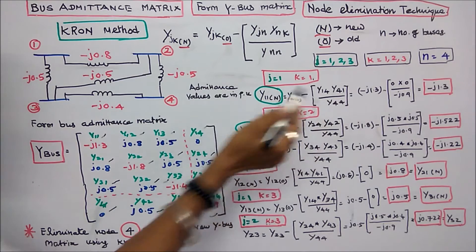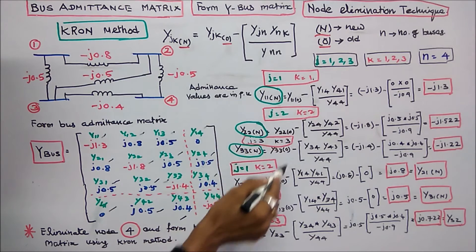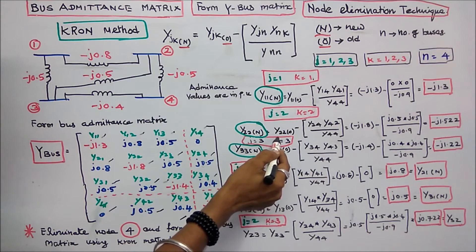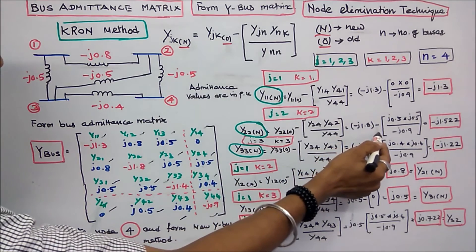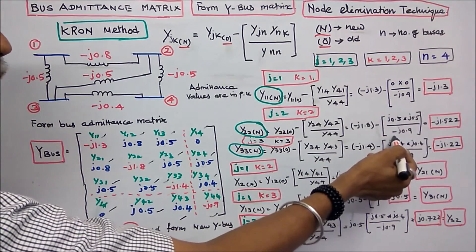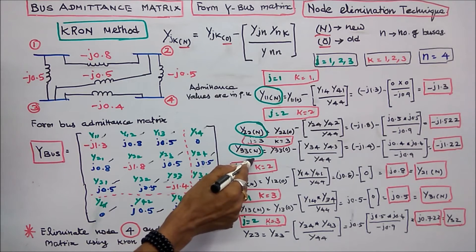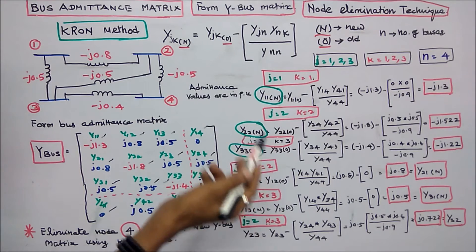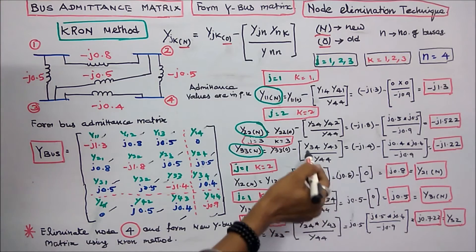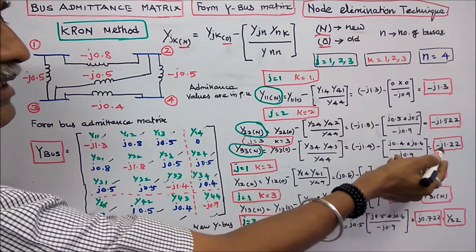For j=2, k=2: Y22(new) = Y22(old) minus Y24 times Y42 divided by Y44. Y22(old) is minus j1.8, Y24 is plus j0.5, Y42 is plus j0.5, and Y44 is minus j0.9. This gives minus j1.8 minus (j0.5 times j0.5 divided by minus j0.9), equaling minus j1.522. For Y33(new): Y33(old) is minus j1.4, minus Y34 times Y43 divided by Y44, which is j0.4 times j0.4 divided by minus j0.9, giving minus j1.22.